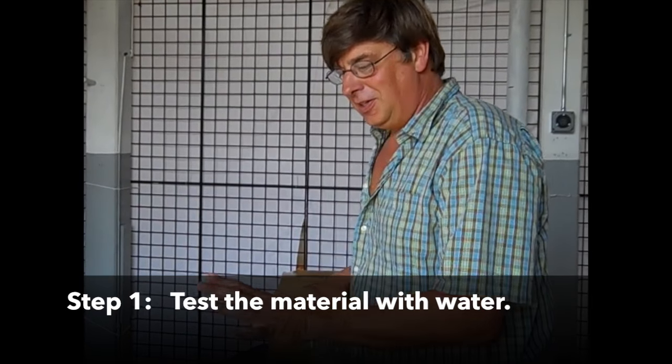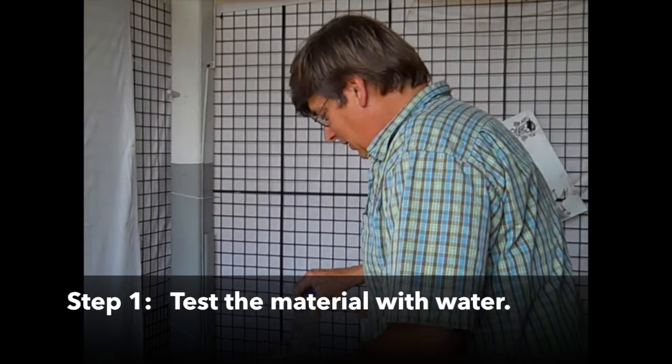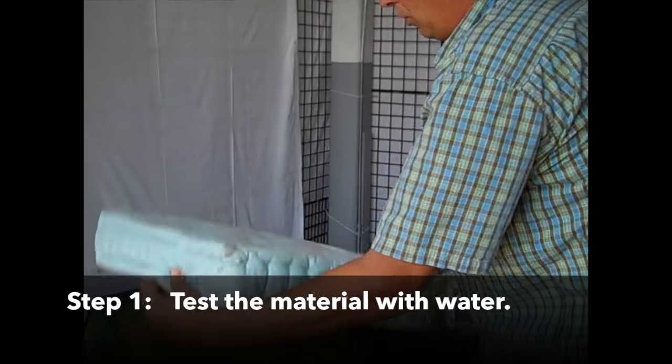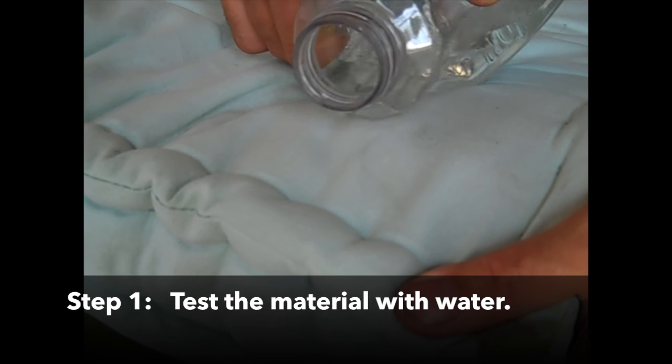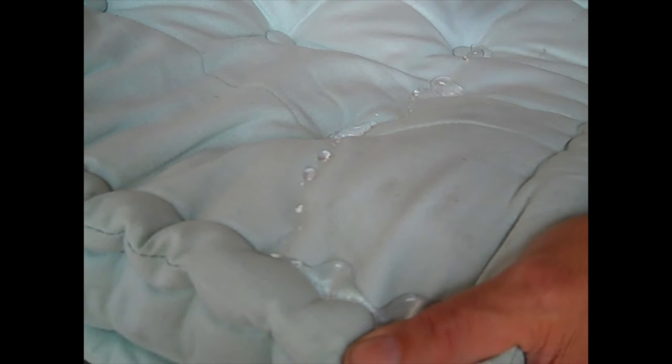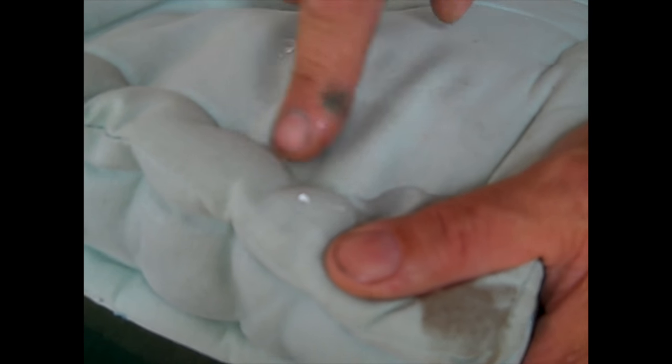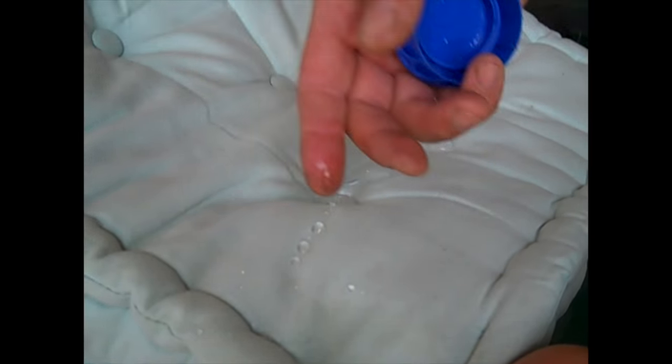We're going to test the material to see if the spray paint is going to work. It has to absorb a little bit of water. Now it might bead up a little bit when you first put it on, but you rub it in like that, and if it soaks in, then you can proceed.